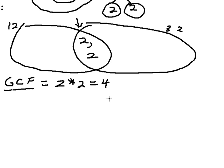The greatest common factor is 4. The product of the numbers in the intersection equals 4.